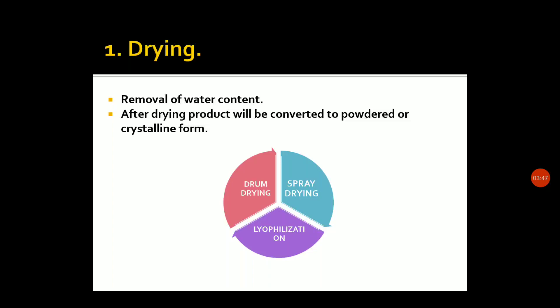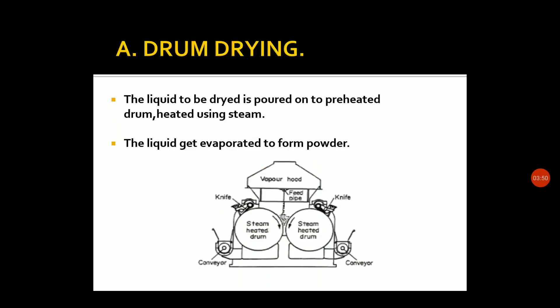We will discuss the drying method of drum-drying. In drum-drying, the liquid to be dried is poured onto a preheated drum heated using steam. The liquid gets evaporated to form powder. Drum-drying uses a preheated drum.